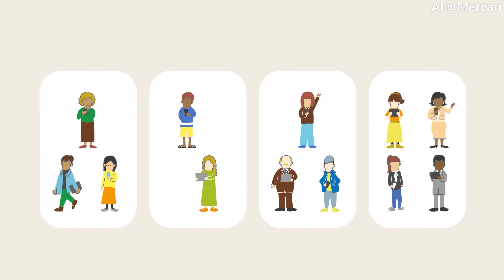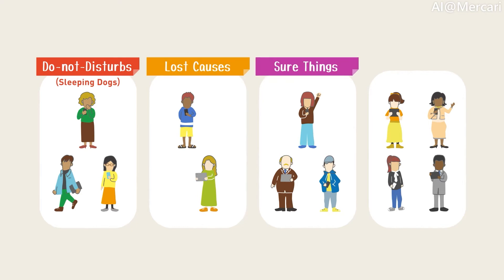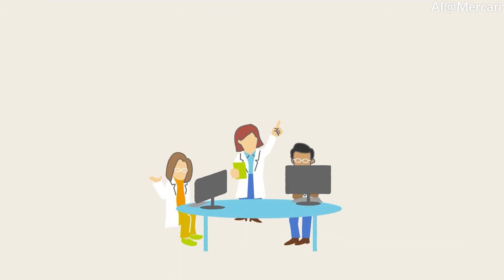So, upon including them into our campaign, we lose sales from do-not-disturbs. Campaigns have no effect on what lost causes and sure things do. We don't have an incentive to include them in our marketing campaigns. Campaigning against the persuadables is where we would like to focus. Now that we have defined terminology, let's get back to our models.